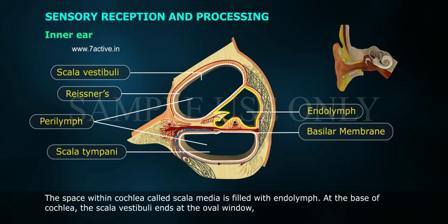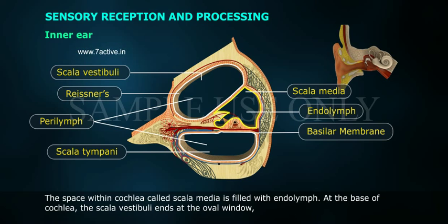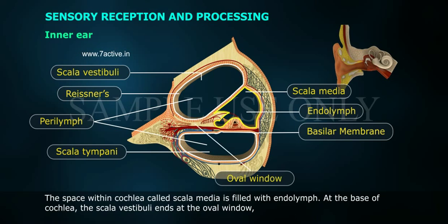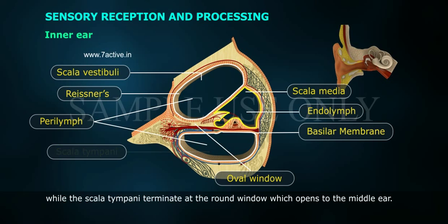The space within the cochlea, called scala media, is filled with endolymph. At the base of the cochlea, the scala vestibuli ends at the oval window, while the scala tympani terminates at the round window, which opens to the middle ear.